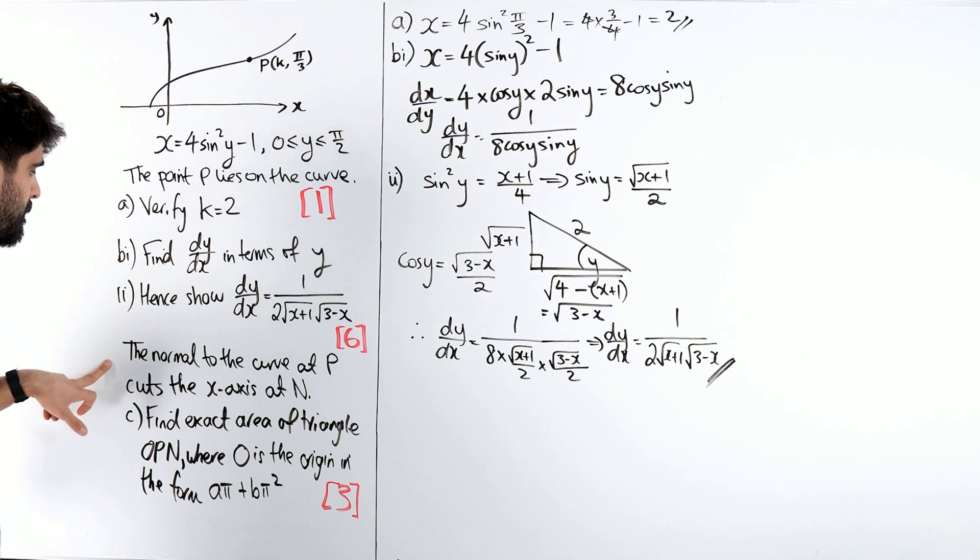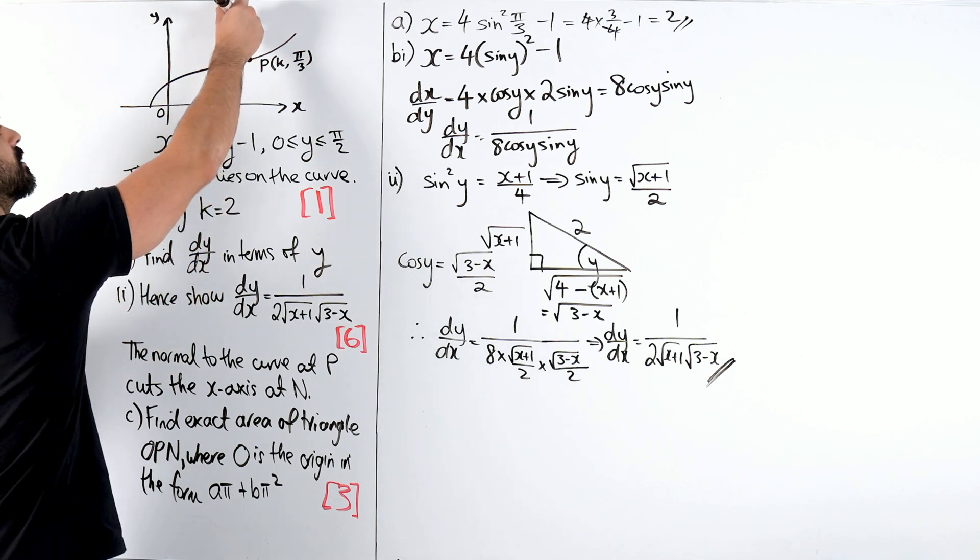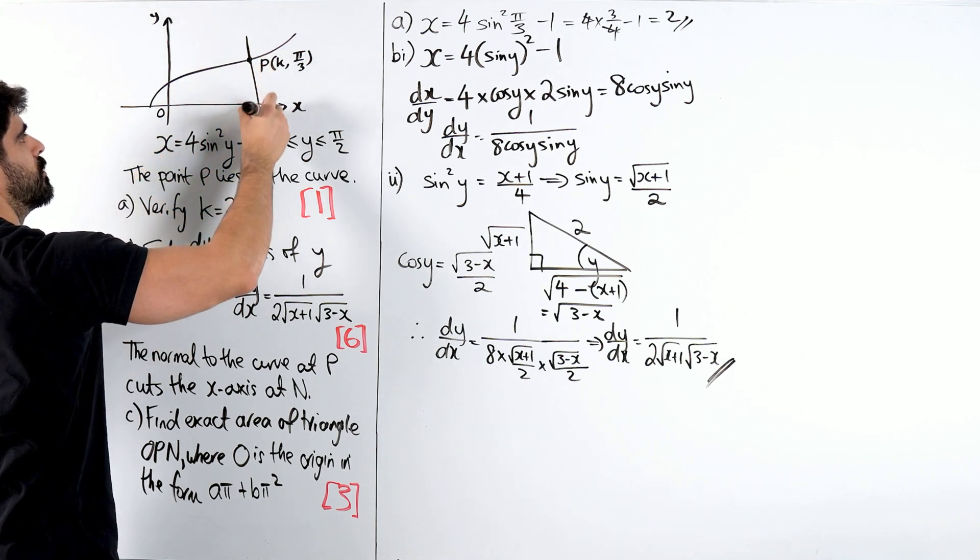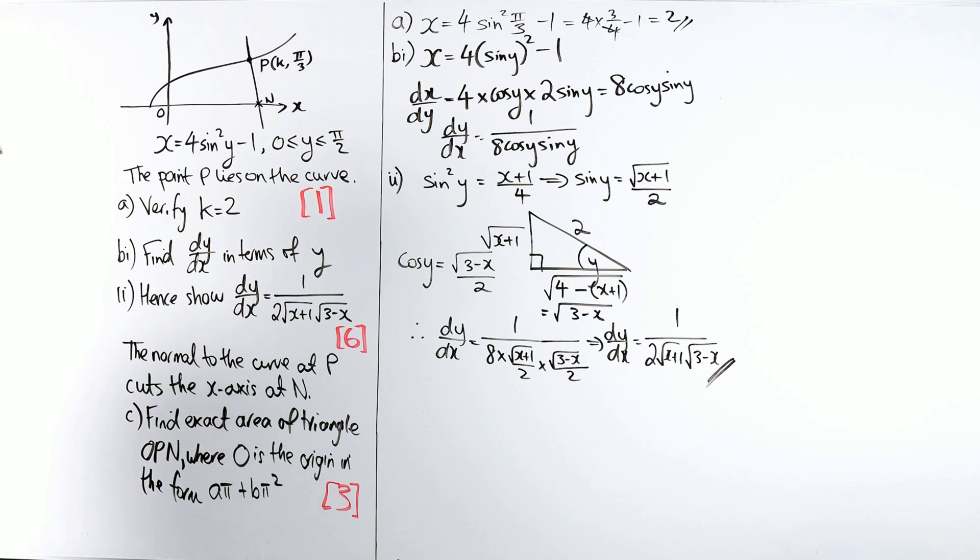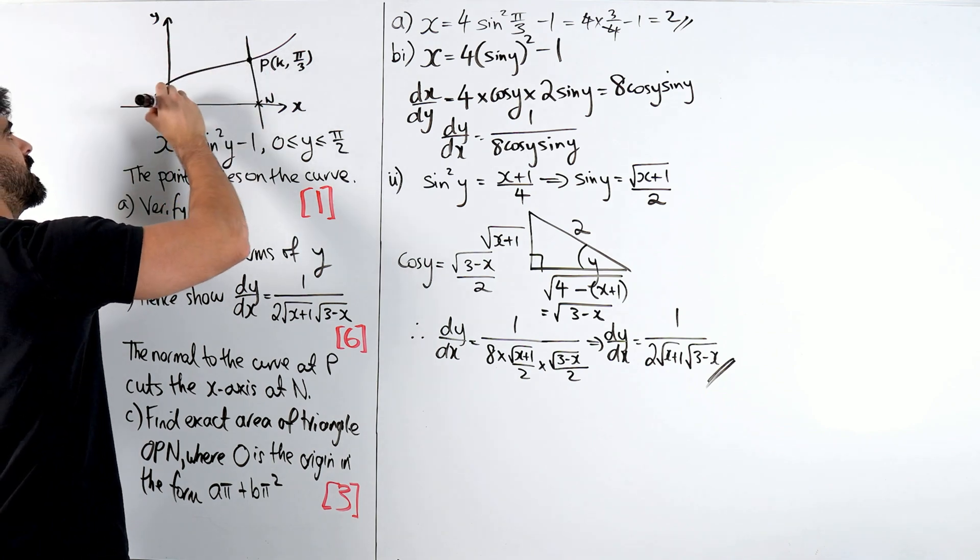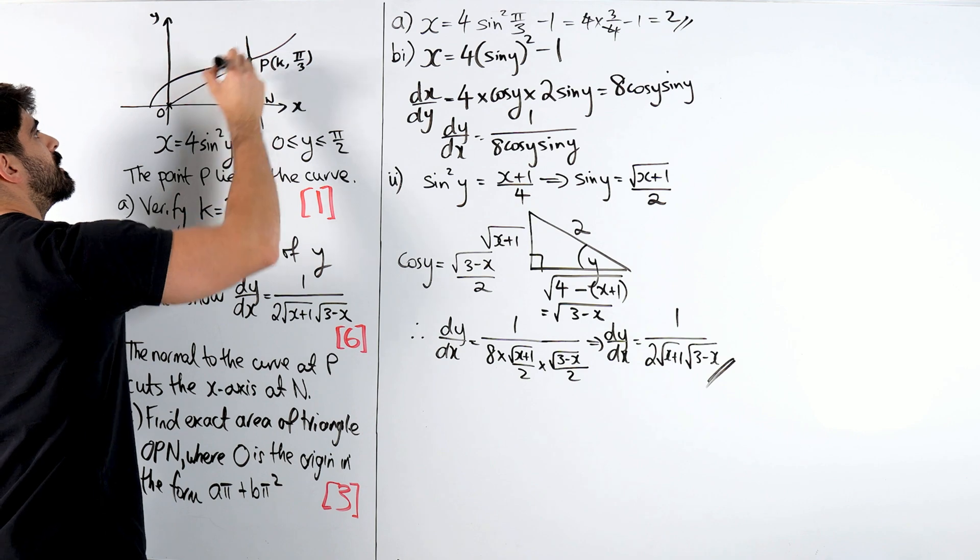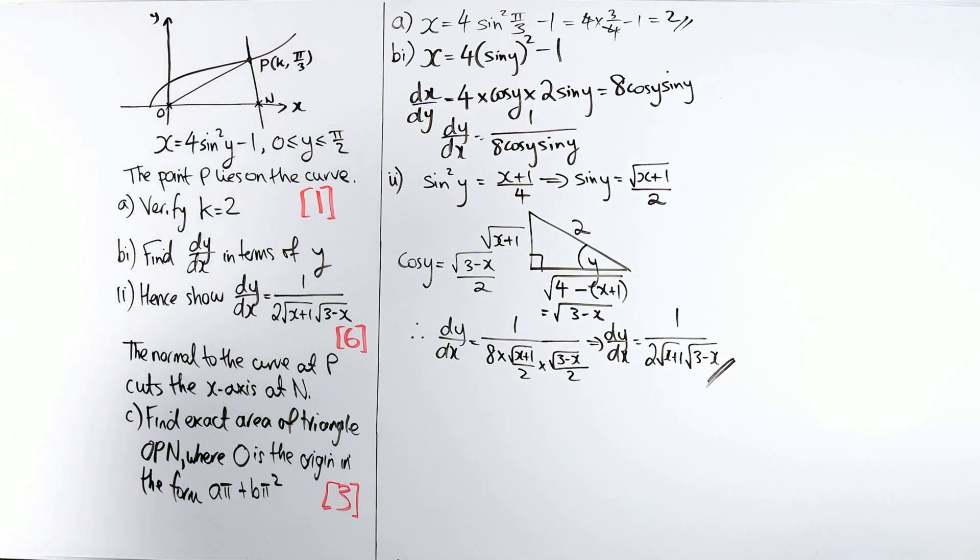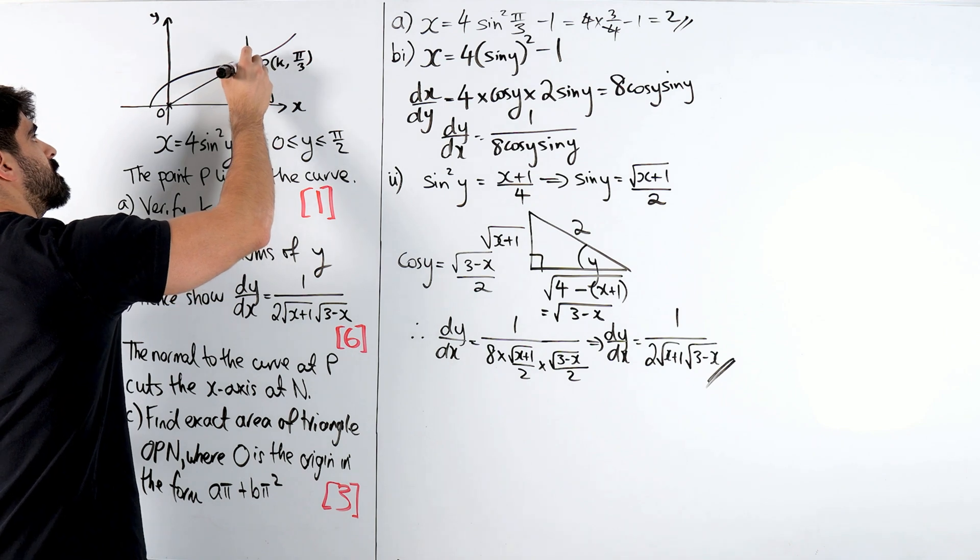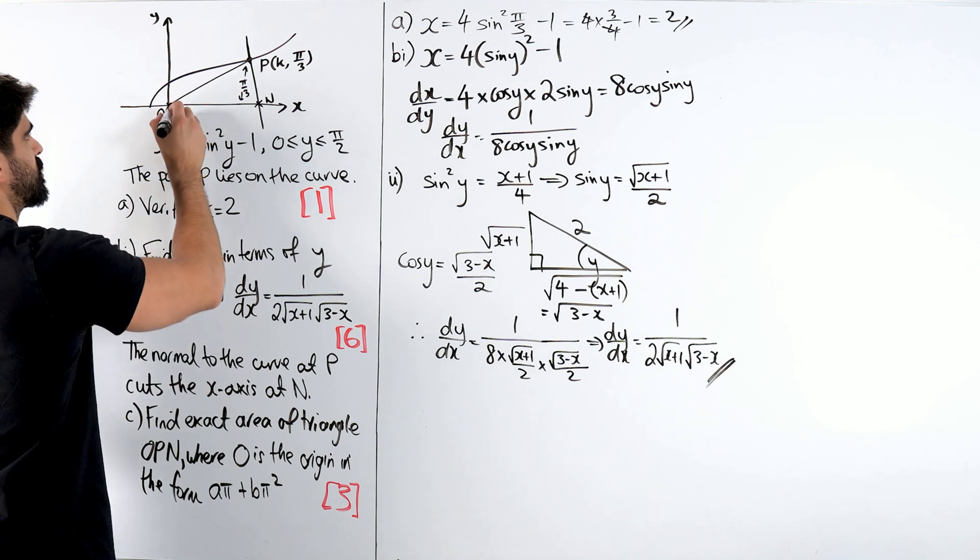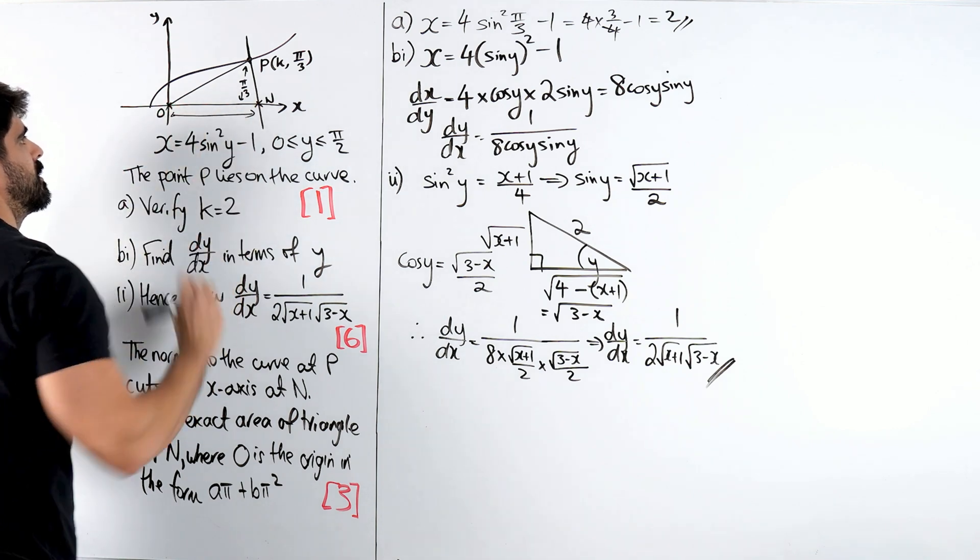It says the normal to the curve at p cuts the x-axis at n. So we have some normal here. That normal crosses the x-axis at n. Find the exact area of triangle OPN, where O is the origin. So here, OPN. I think the best way to do that is to just do base times height, where the height here is pi over 3. We need to work out what n is.